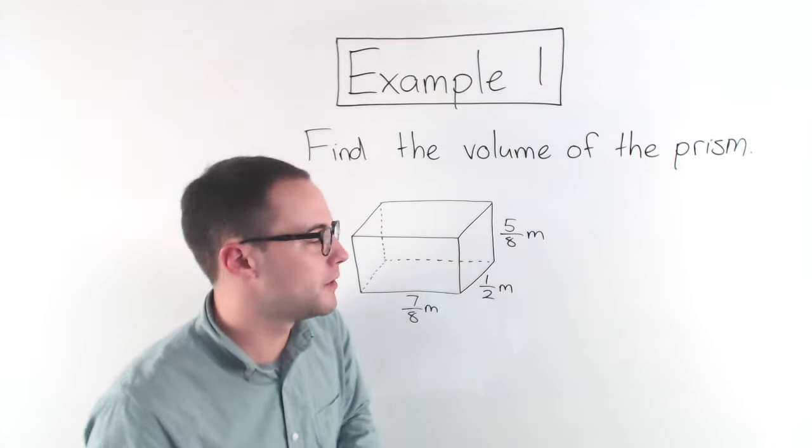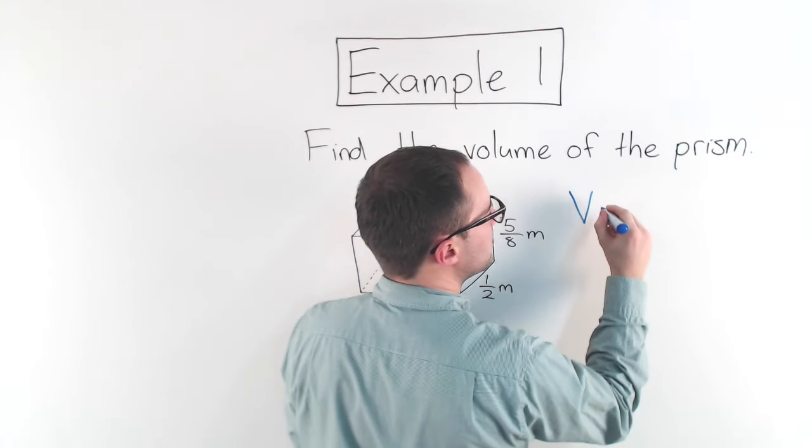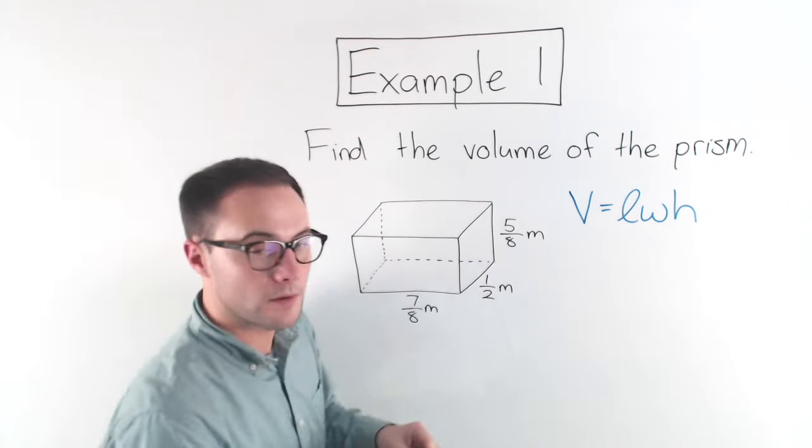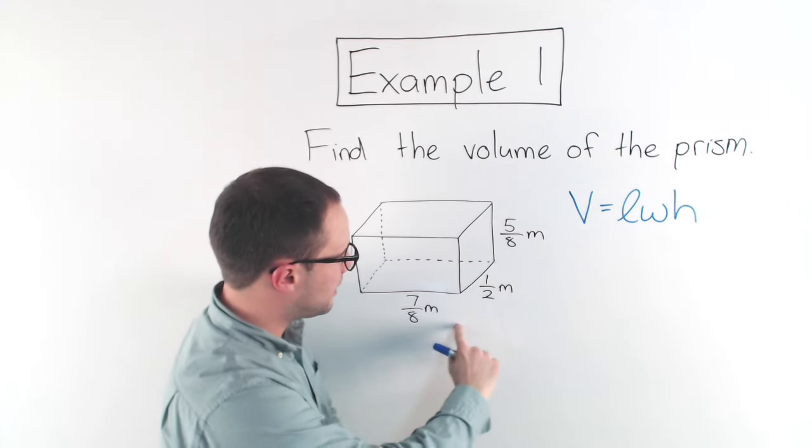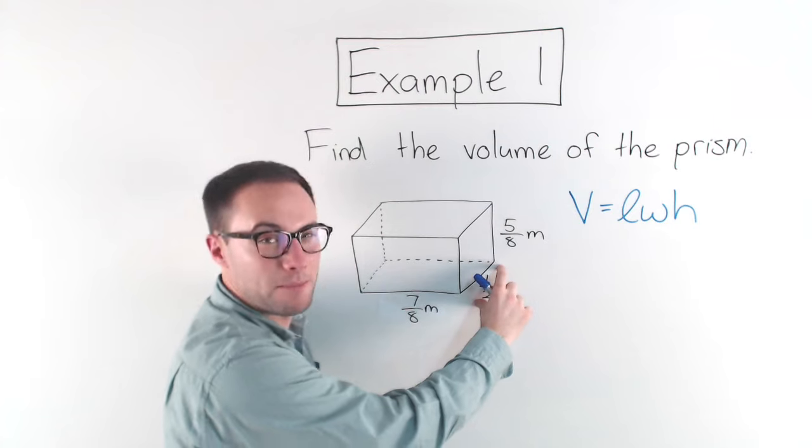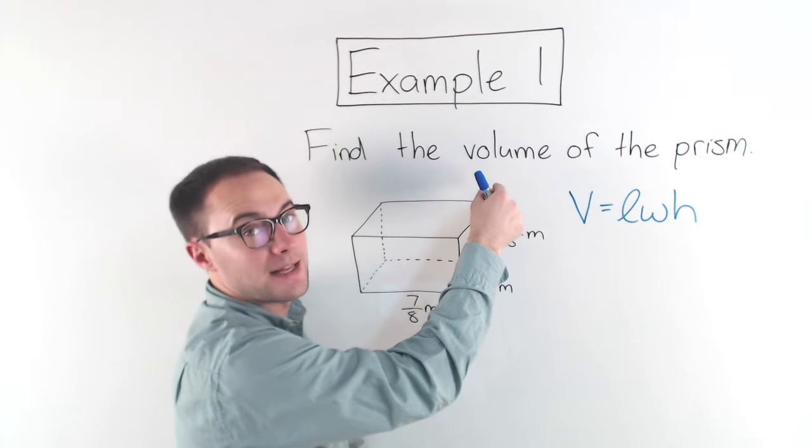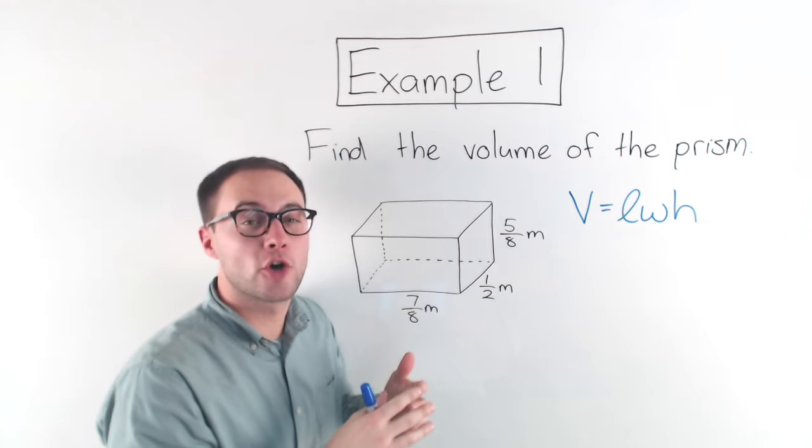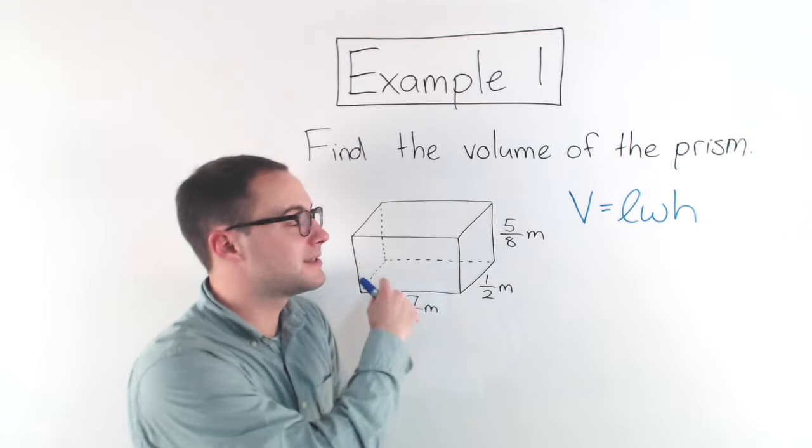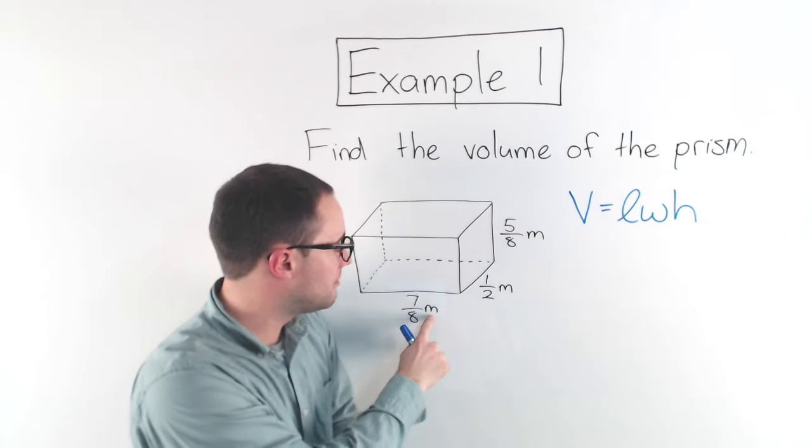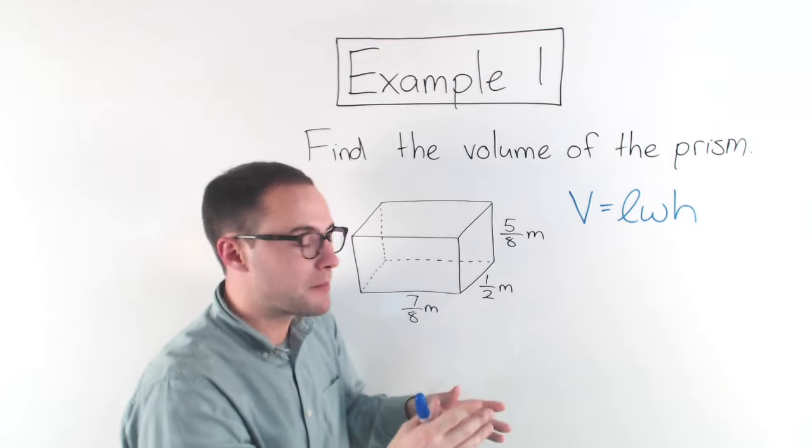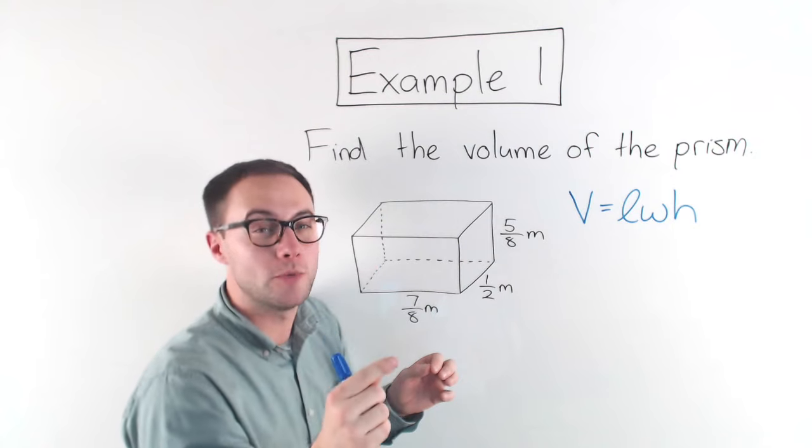First one you may be familiar with, and that's just volume equals length times width times height. Okay, so length here times the width, how deep it goes back, times the height. That will give you the volume. Your units are always going to be cubic units. Remember, because this is three-dimensional, and we're doing meters times meters times meters. So at the very end, I'm going to have meters cubed.